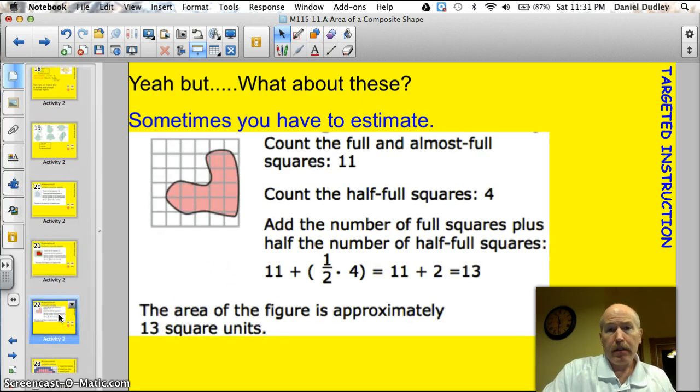Here's another yeah but. What about these? Sometimes you just have to estimate. You do the same thing. Count the full and the almost full squares. So if you do that, and this one here, you would find that they're 11. And if you count the half squares like this one here. One. Two. Looks like we've got a third one here. Then maybe these ones down here count as a fourth. And you add those together. You got 11 full ones plus the four halves would give you 13. So again, you're just approximating it. It's the best you can do.